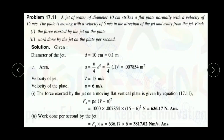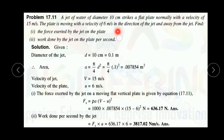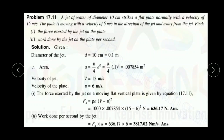Let us start now. A jet of water of diameter 10 cm strikes a flat plate normally with a velocity of 15 meters per second. The plate is moving with a velocity of 6 meters per second in the direction of the jet and away from the jet. Find the force exerted by the jet on the plate and work done by the jet on the plate per second.